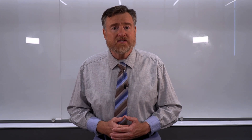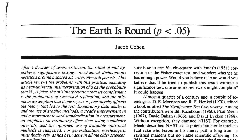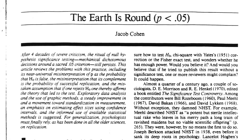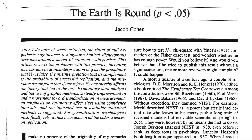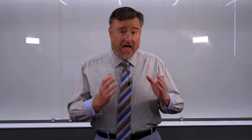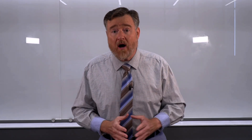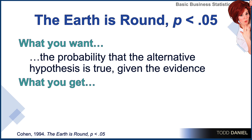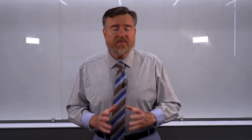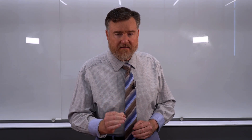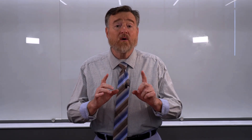Jacob Cohen wrote about this in an article titled 'The Earth is Round p less than 0.05,' in which he pointed out that when we do statistical hypothesis inference testing, what we want is the probability that the alternative hypothesis is true given the evidence. Looking at the difference between this sample mean and that population mean, how likely is it that our treatment worked? That this education was effective? That's what we want.